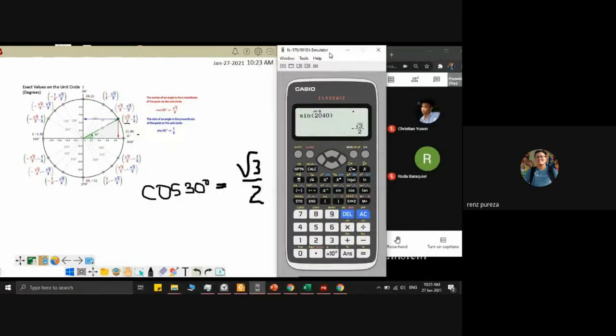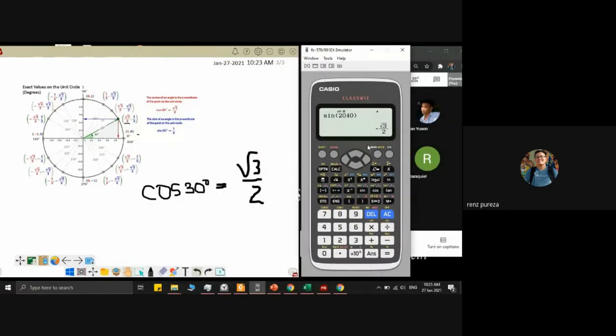Now let's look at the calculator. In my calculator, we can input cosine 30. What is cosine 30? Cosine 30 is square root of 3 over 2. This is what I'm saying - the calculator outputs it directly.